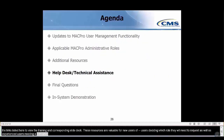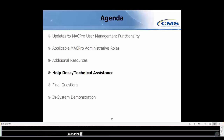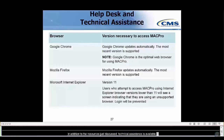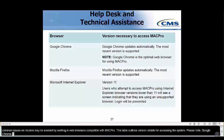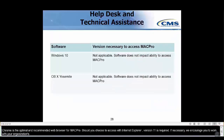Technical assistance is available to MACPro users via the MACPro Help Desk. Some common issues we receive at the Help Desk may be avoided by working in web browsers compatible with MACPro. This table outlines web browser version details for accessing the system. Please note that Google Chrome is the optimal and recommended web browser for MACPro. Should you choose to access MACPro with Internet Explorer, version 11 is required. We encourage you to work with your organization's IT department to prepare for working in MACPro. This table also lists the software requirements for accessing MACPro, for your future reference.